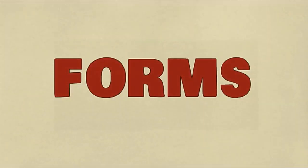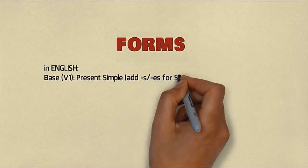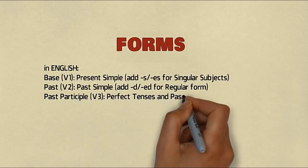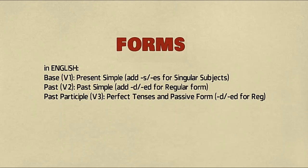Now let's discuss the characteristics of verbs. What are verbs in English? There are three types: base form, past form, and past participle form. Base form is verb 1, used in simple present tense - add -s or -es if the subject is singular: he, she, it. Past tense uses -d or -ed for regular verbs; irregular verbs have their own forms. Past participle or verb 3 is used for perfect tenses and passive forms. The form is the same as verb 2.